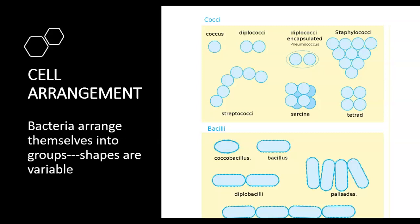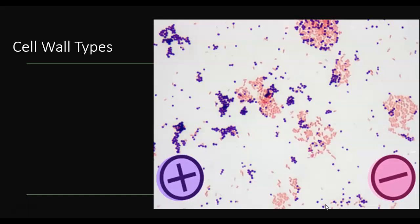When you look at bacteria under the microscope, pay attention to how they arrange themselves. Some will come in pairs, some will form lines, some will form clusters, and some are going to be spread out without attaching to other bacteria. Pay attention to these characteristics because they help you identify the bacteria correctly. For your exam, you should know what terms like coccus, diplococci, and streptococci mean — study these and know what they mean.